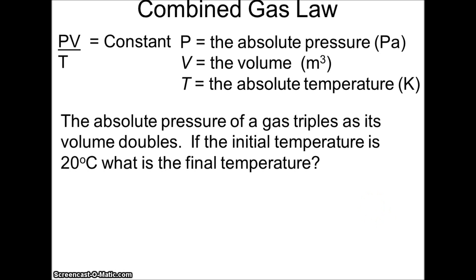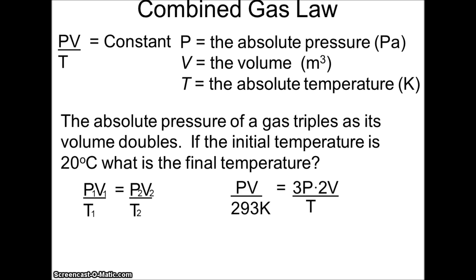The absolute pressure of a gas triples as its volume doubles. If the initial temperature is 20°C, what is the final temperature? First, convert: 20°C is 293 K. Using P1V1/T1 = P2V2/T2 — pressure triples and volume doubles — the P and V terms give a factor of 6, so the new temperature is 6 × 293 K = 1758 K. To convert back to Celsius, subtract 273.